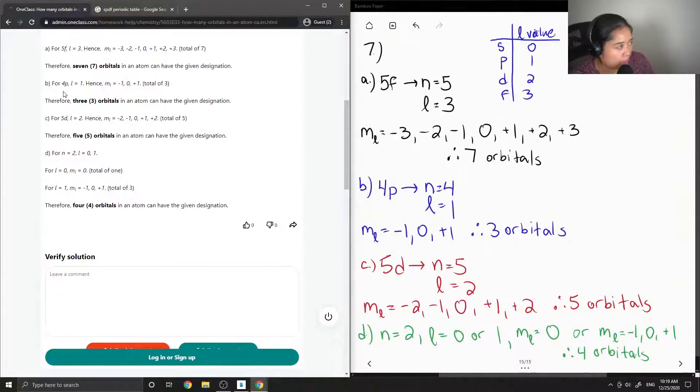For 4p, l is equal to one. Hence, ml is equal to negative one, zero, or positive one. Therefore, three orbitals in an atom can have the given designation.